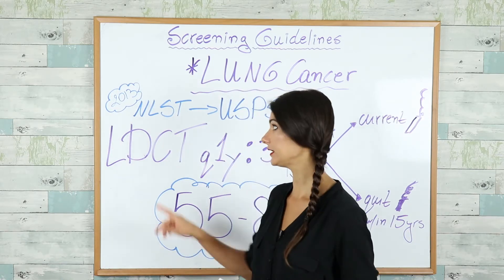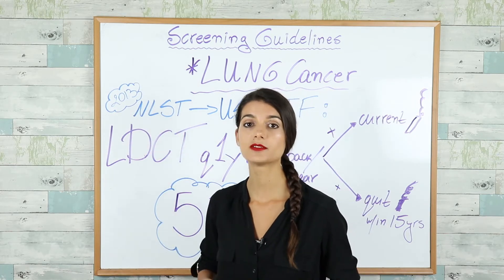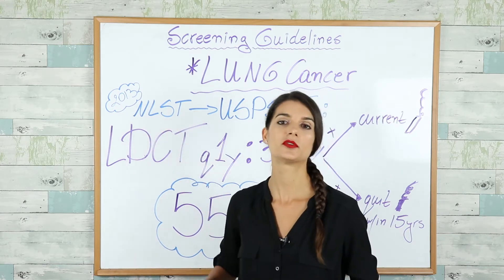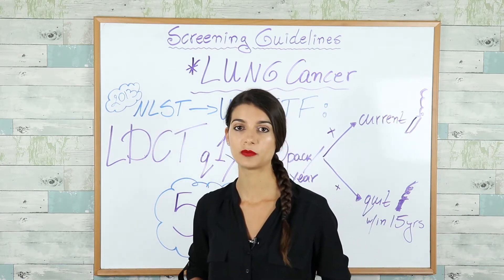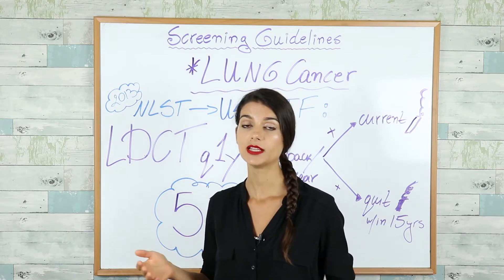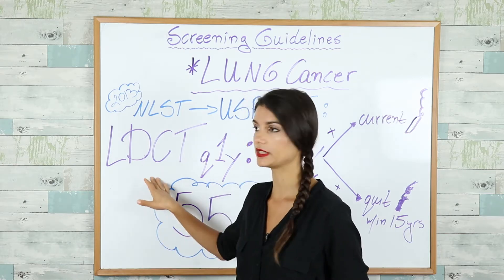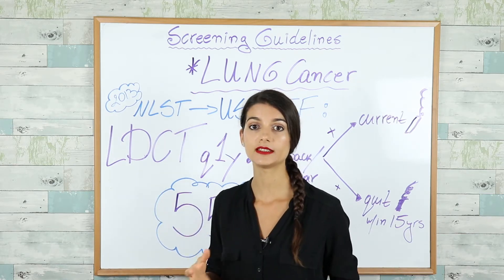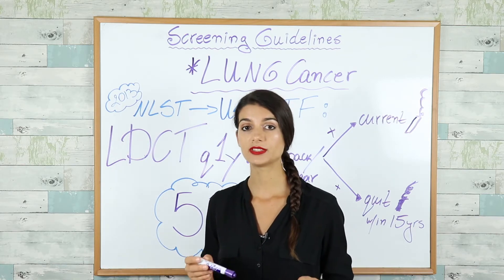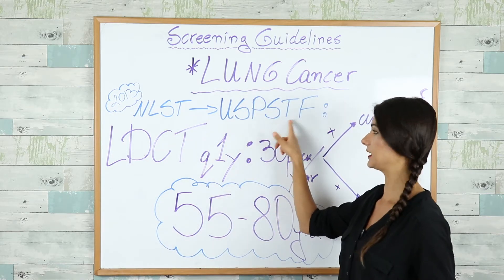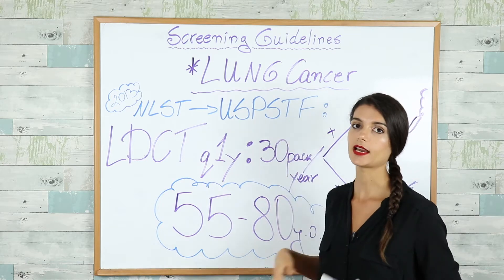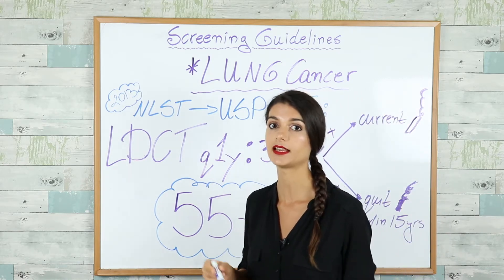In 2013 there was a huge randomized clinical trial called the National Lung Screening Trial. It involved more than 50,000 people and they found that if they screened certain people at high risk for developing lung cancer with low-dose CT scan, the lung cancer deaths actually decreased by 20%. After this clinical trial, the USPSTF — the United States Preventive Services Task Force — updated their lung cancer screening guidelines.